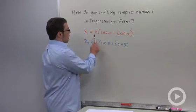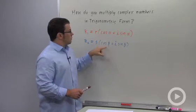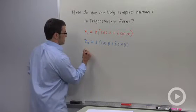So R and S are the moduli of the two numbers, remember the absolute value, alpha and beta are the arguments. Let's multiply these two.